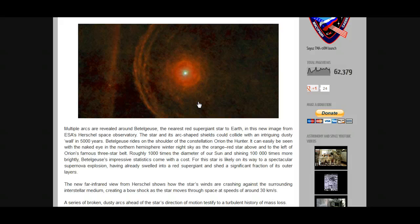Betelgeuse rides on the shoulder of the constellation Orion the Hunter. It can easily be seen with the naked eye in the northern hemisphere winter night sky, as the orange-red star above and to the left of Orion's famous three-star belt.